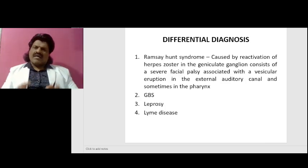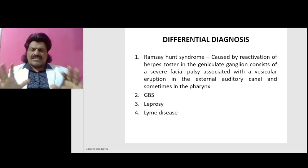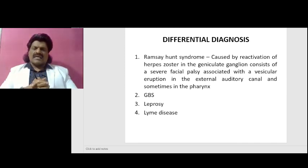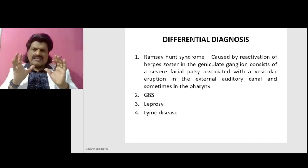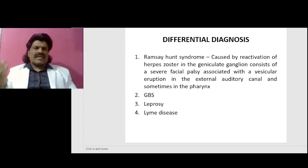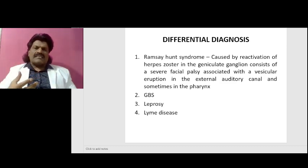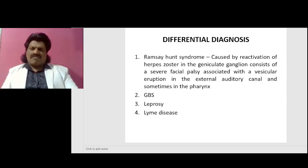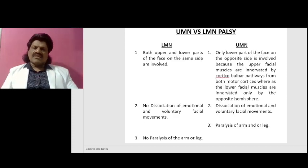The differential diagnosis includes Ramsay Hunt syndrome, Guillain-Barré syndrome, leprosy, and Lyme disease. Ramsay Hunt syndrome is caused by reactivation of herpes zoster in the geniculate ganglion and consists of a severe facial palsy associated with vesicular eruption in the external auditory canal, and sometimes in the pharynx.